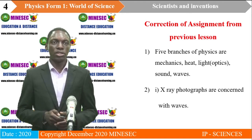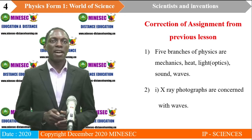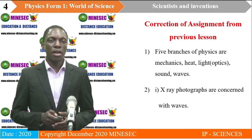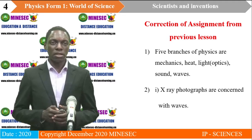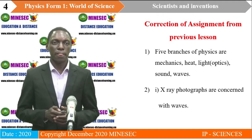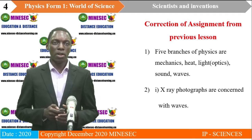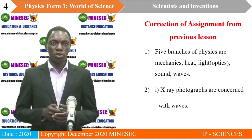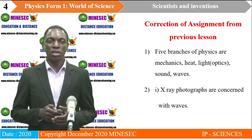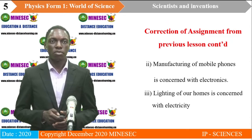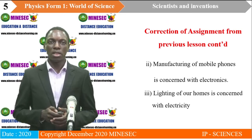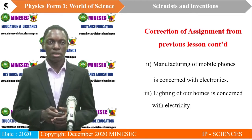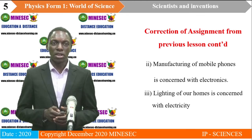For the correction: 5 branches of physics are mechanics, heat, light or optics, sound and waves. Question 2, Roman 1: X-ray photographs are concerned with waves. Roman 2: manufacturing of mobile phones is concerned with electronics. Roman 3: lighting of our homes is concerned with electricity.